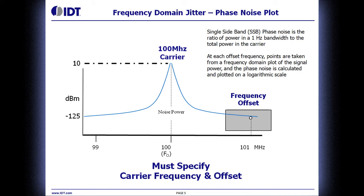If we look at this frequency domain jitter, we map it out in what we call a phase noise plot. This is a specific example of a 100 megahertz carrier frequency, which is the peak centered in the middle of the graph. On specific applications, engineers may only care about a small portion of that graph — in high-speed datacomms, which is a huge growing segment, they'll look at a very small portion represented by that gray box on the right. That box represents a frequency offset range from that 100 megahertz carrier — also called a frequency offset mask or jitter mask.